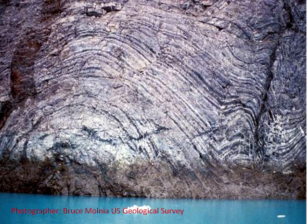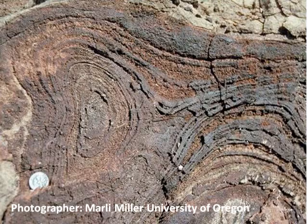If this takes place near the surface, where temperatures are low, then the deformation leads to fracture, because the rock is brittle. Where the temperature is higher, deformation results in less fracture, because the rock becomes ductile. The deformation is by flowing rather than fracturing. Here there is a sheath fold in calcite marble.